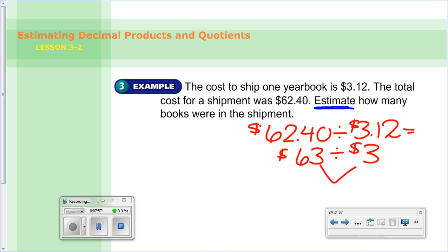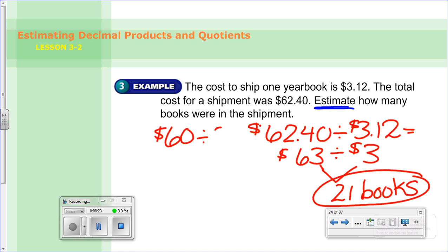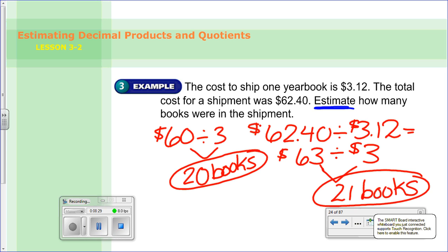Alright, so if we do this, $63 divided by $3. That would be $21. And it's not dollars, it's books. There were about 21 books in that shipment. Now instead, you might have chose to round down to 60 instead. 60 divided by 3. And if you were to do that, you get 20 books. So as you can see, even if you round it down or if you round it up a little bit, they are pretty close. 20 or 21. Generally, that would be about what it would be.